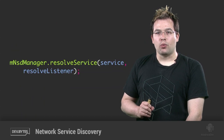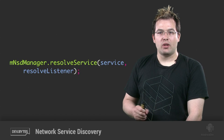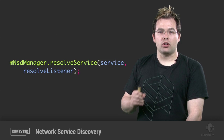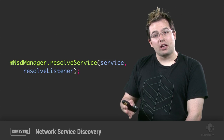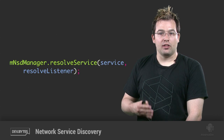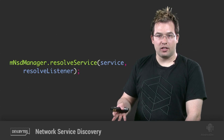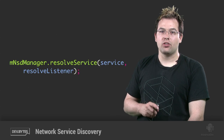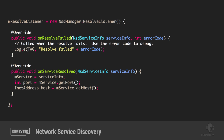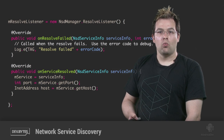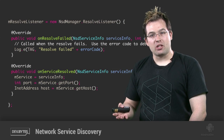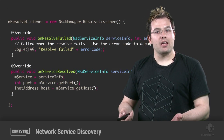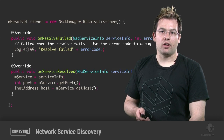Once we know which devices we want to connect to, we call resolveService. This is another asynchronous call — it's a little bit expensive — so again we have a listener that will get the results. This is where we find out the IP address and port number of the device we want to connect to. Once you get that information, we'll go ahead and connect to it directly using a standard socket.